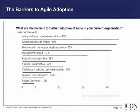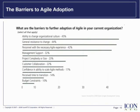The barriers to Agile adoption. It's important to not only know what is required for success, but we should also know what barriers may lie ahead of us on this Agile journey. This survey provided by Version One presents the top nine barriers to Agile adoption that companies are currently experiencing: ability to change organizational culture, general resistance to change, personnel with the necessary Agile experience, management support, project complexity or size, customer collaboration, confidence in the ability to scale Agile methods, perceived time to transition, and budget constraints.